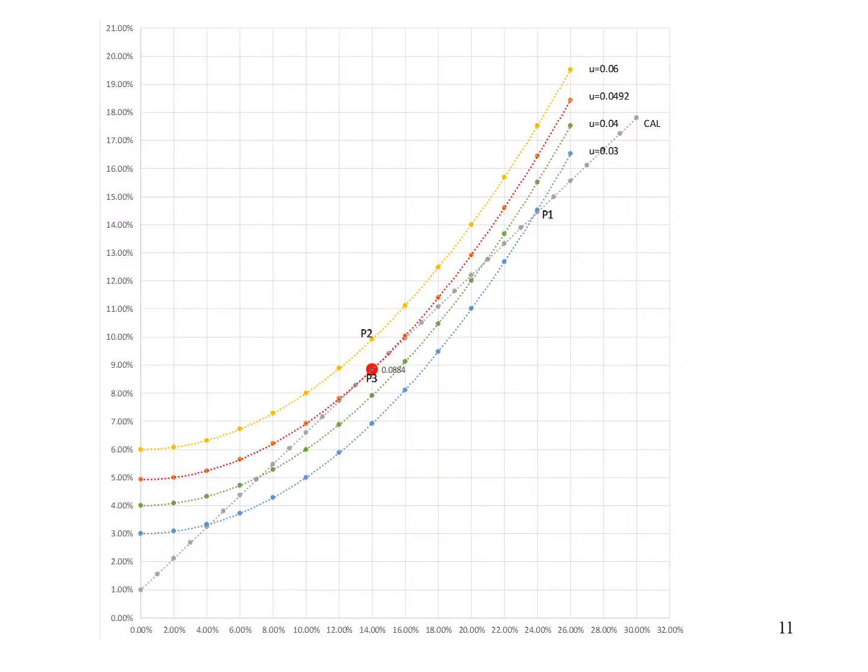The optimal asset allocation decision can be solved graphically using the indifference curve and the capital allocation line. Take note of the point where the indifference curve touches the capital allocation line. This is the point where investor can achieve the highest possible indifference curve that gives the highest utility. To conclude, the optimal complete portfolio is located at the point where the indifference curve is tangent to the capital allocation line. The tangency point represents the complete portfolio that maximizes utility. The tangency point occurs at standard deviation of 14% and expected return of 8.84%.